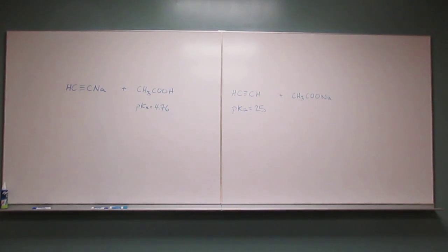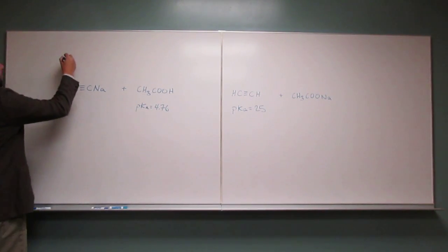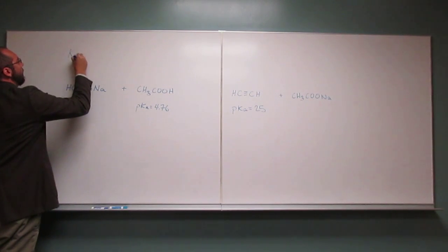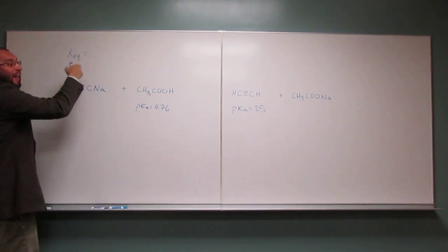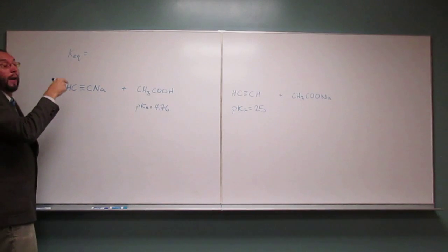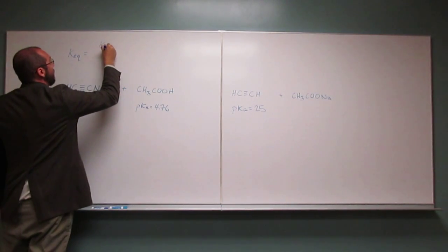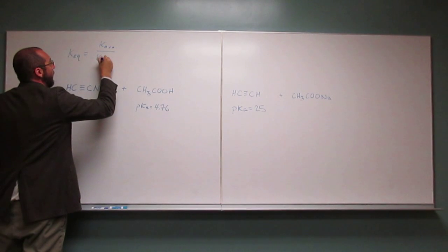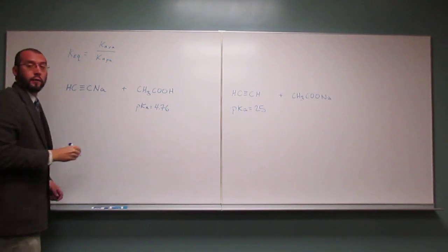So we've got to remember a couple things to do this problem. First off, how do we figure out what the equilibrium constant is? There's an actual equation. If you don't remember it, I'll help you out. Products over reactants... well actually, it's the Ka of the reactant acid over the Ka of the product acid.